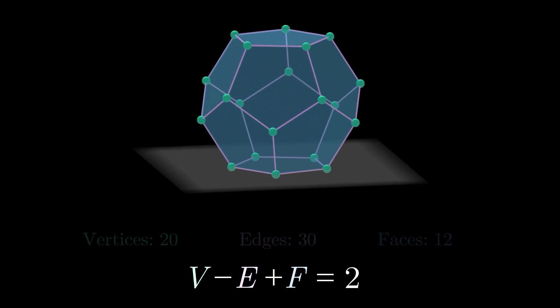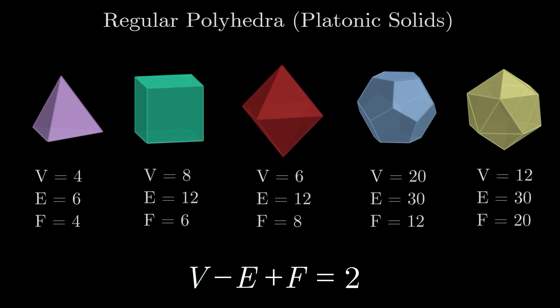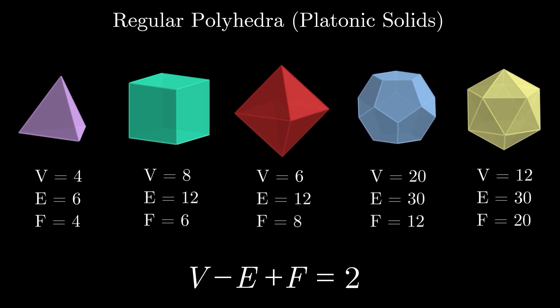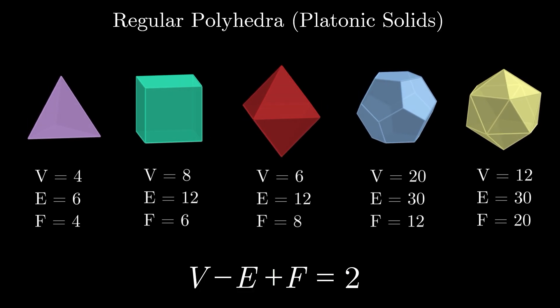Interestingly, if we complete this calculation for any of the 5 regular polyhedra, also known as platonic solids, we arrive at the same value of 2.